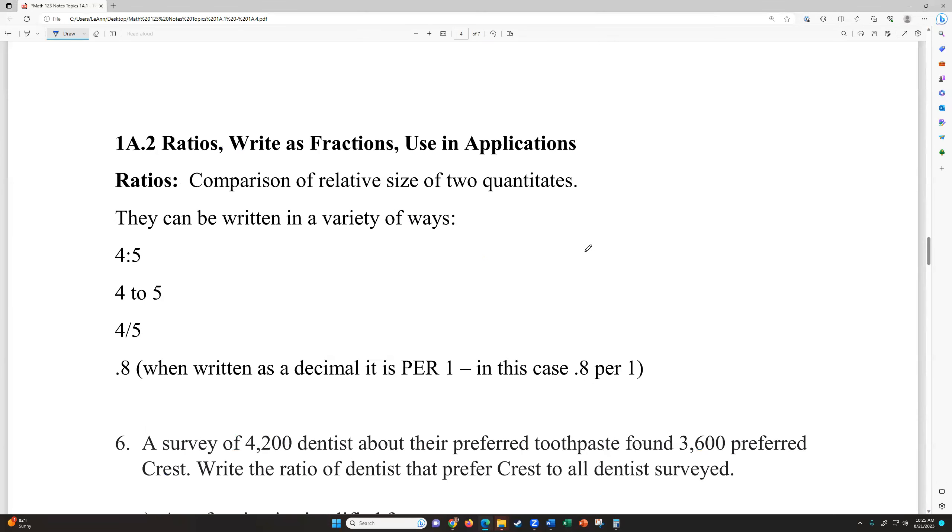For 1A2, we were looking at ratios to write fractions and writing ratios as fractions and using them in applications. So comparisons of relative size of two quantities is what a ratio is used for. They can be written in a variety of ways using a colon, using the word to, so 4 to 25 and 4 divided by 5. Another way you can write it is if you actually do the division on the fraction and turn that into a decimal, that's considered that answer per 1. So we could say this is 0.8 per 1 or to 1.